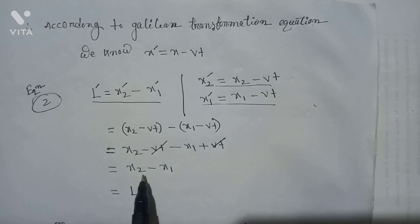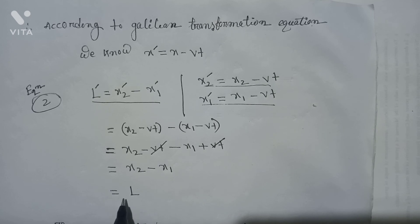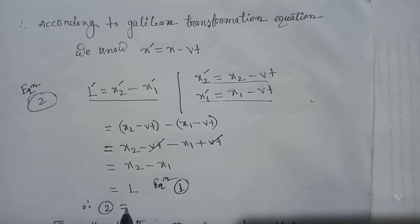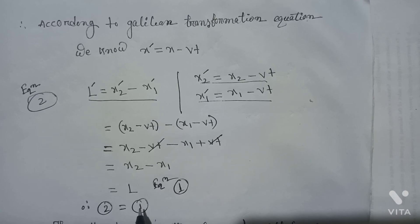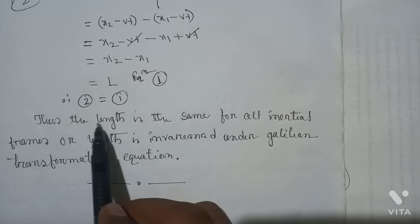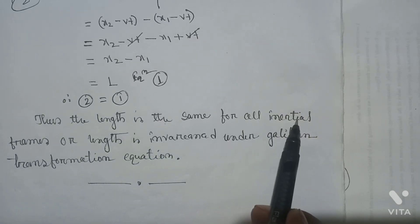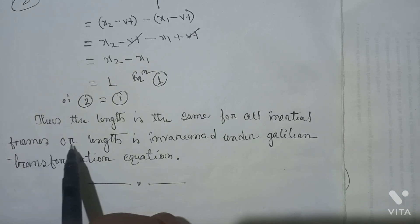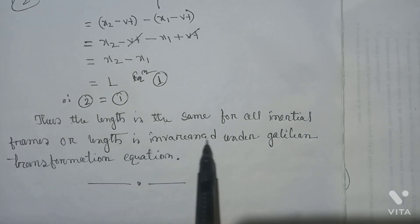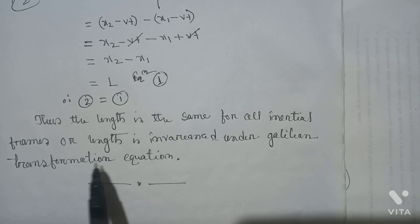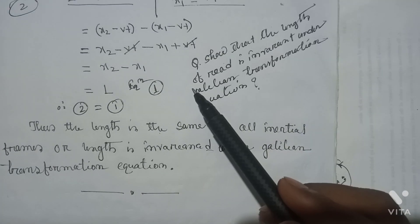That is, equation 2 equals equation 1. Thus the length is the same for all inertial frames, or length is invariant under Galilean transformation equation.